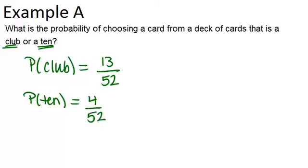Before we move further, we should think about: are these two events mutually inclusive? Do they share some overlap? Is there a card or two that fits in both of these? Or are they exclusive, where they have no overlap? When you think about it, you'll realize that there is one card that fits in both, and that would be the 10 of clubs.